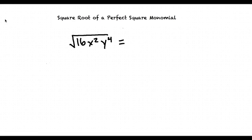Let's say we would like to find the square root of 16 times x squared times y to the 4th. This is equivalent to multiplying the square root of each term together. So it's going to be equal to the square root of 16 times the square root of x squared times the square root of y to the 4th.